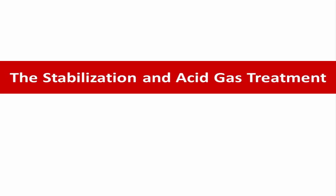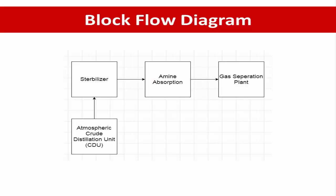The stabilizer unit handles gas treatment. The mixture of hydrocarbon gas from the atmospheric crude distillation unit (CDU) contains variable amounts of carbon dioxide, hydrogen sulfide, and water vapor. Hydrogen sulfide cannot be tolerated because it is poisonous and corrodes metallic equipment. Carbon dioxide is undesirable because it reduces the heating value of the gas and can solidify under high pressure and low temperature during natural gas export.